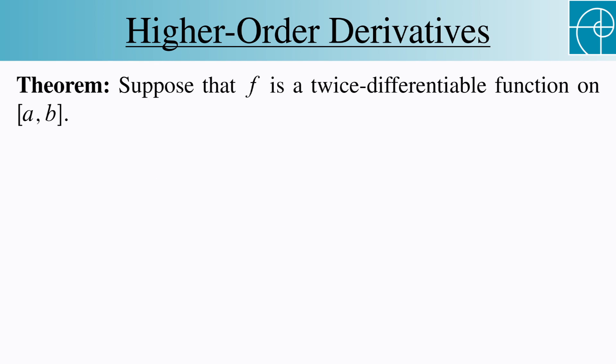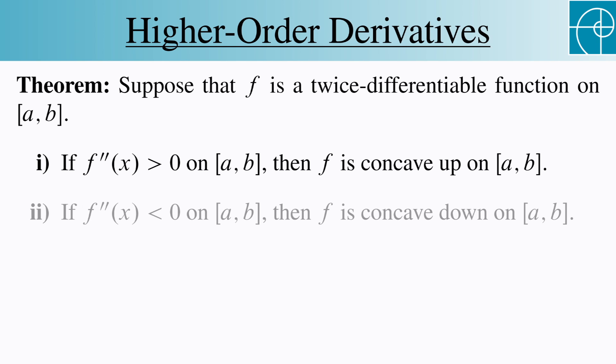Suppose that f is a twice-differentiable function, meaning that f' and f'' both exist. If f'' is greater than 0 on [a,b], then f is concave up on [a,b]. Likewise, if f'' is less than 0, then f is concave down.